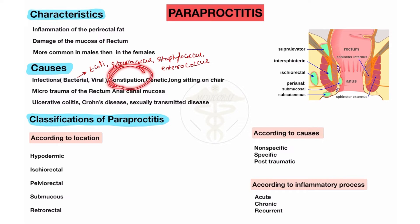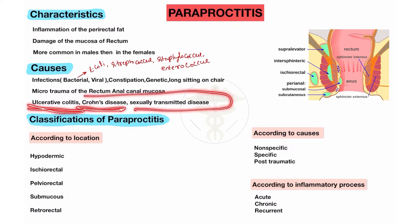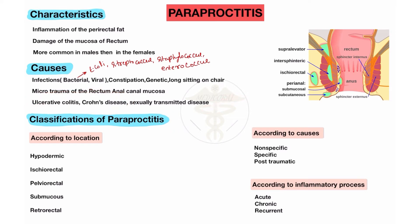Also viral infections contribute. Constipation is another cause — when a person has constipation for a long time and doesn't defecate for mostly five to six days, it also causes Paraproctitis due to inflammation in the perirectal fat. Genetic causes also exist. Long sitting on a chair causes micro-trauma of the rectal anal canal mucosa. Diseases like ulcerative colitis, Crohn's disease, and sexually transmitted diseases also cause Paraproctitis.